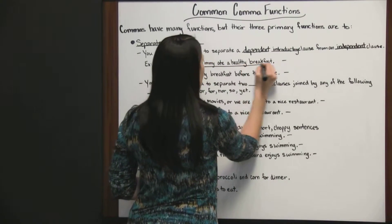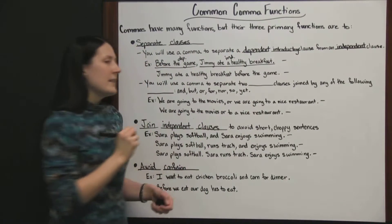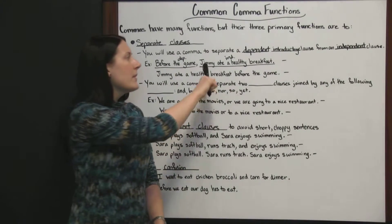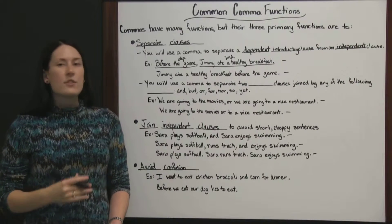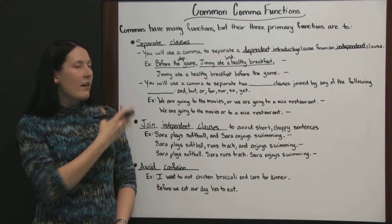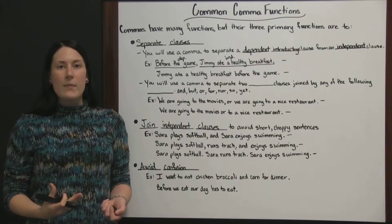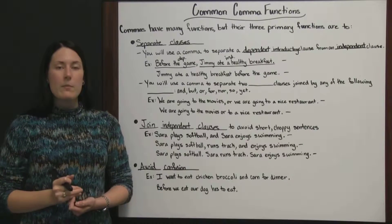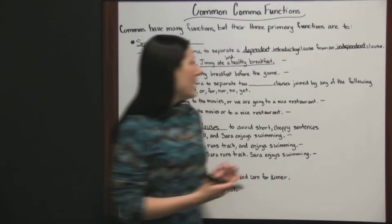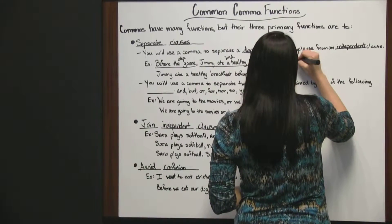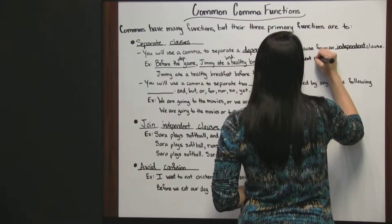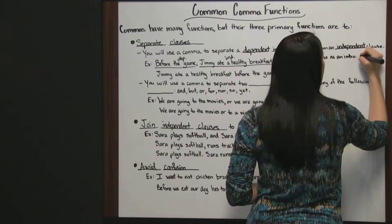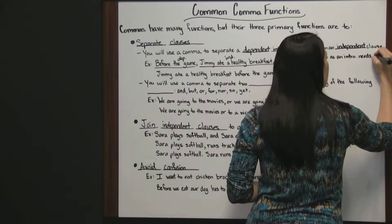Then you have 'Jimmy ate a healthy breakfast,' which is independent — it could stand all by itself. We are separating the dependent introductory clause from the independent clause: 'Before the game, Jimmy ate a healthy breakfast.' You notice how you pause where that comma is. A lot of times that's why a comma is there — to get you to pause so that your sentence makes sense as you're reading it, either to yourself in a book or aloud to someone else. So, a dependent clause as an introduction needs a comma.